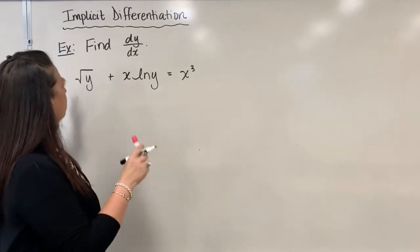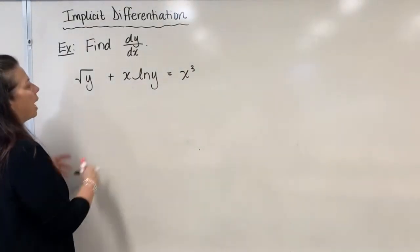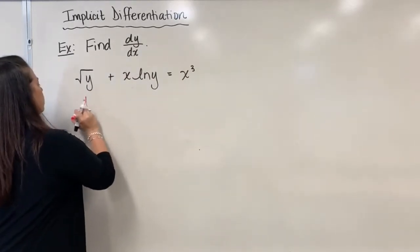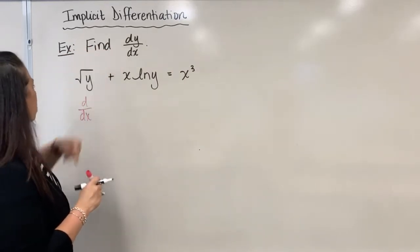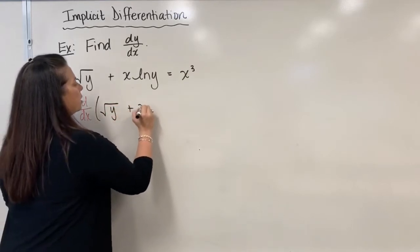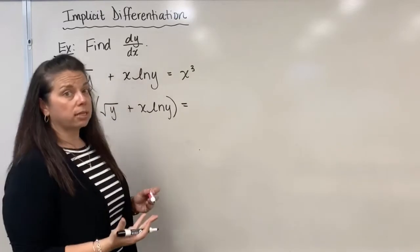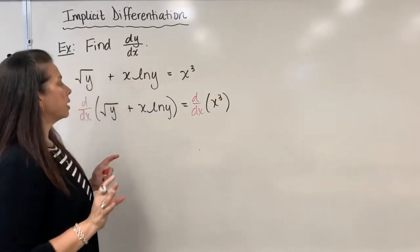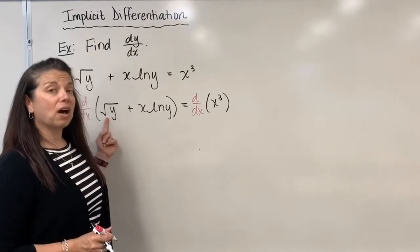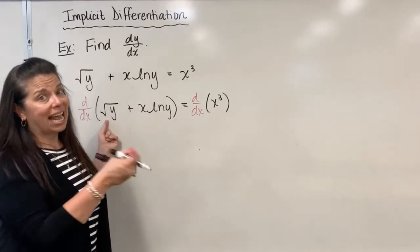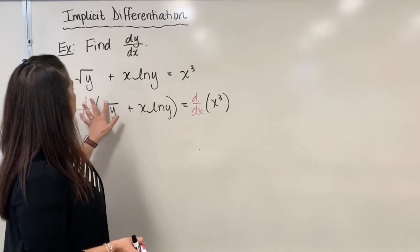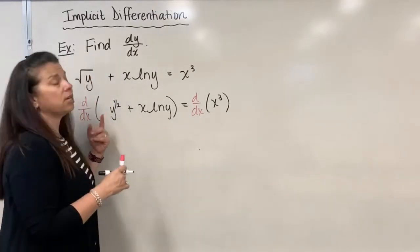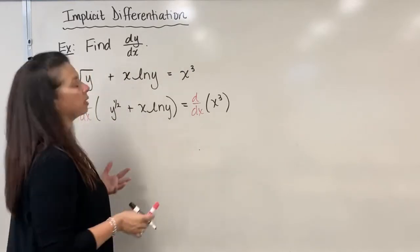We're going to start by setting up the derivative. I'll take the derivative of the left side and also the right side. So I have d/dx of the entire left side — square root of y plus x natural log y — and then d/dx of x cubed on the right. I'm also going to rewrite the square root term as y to the one-half power, since those are equivalent expressions, and this lets us leverage the power rule.